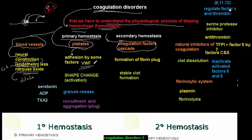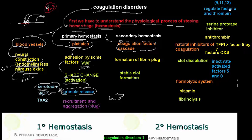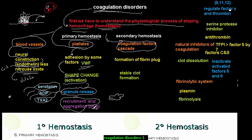After platelet adherence to the blood vessel, the platelet undergoes changes in shape — this change is the activation of the platelet. When the platelet activates, it will release some granules like serotonin, ADP, and thromboxane. These factors lead to further platelet aggregation and recruitment at the torn blood vessel, ultimately forming the platelet plug. This process is primary hemostasis.